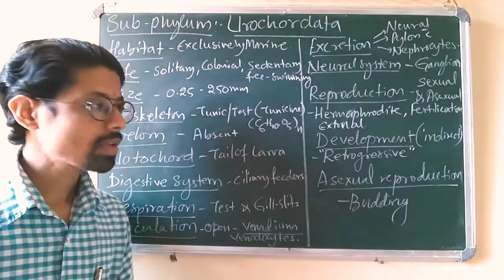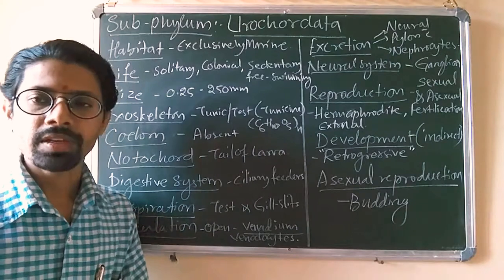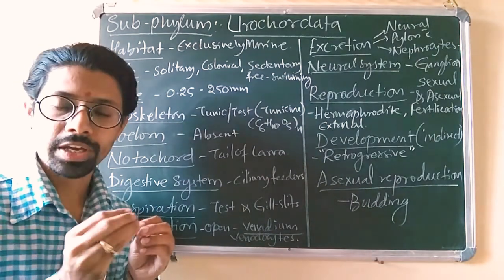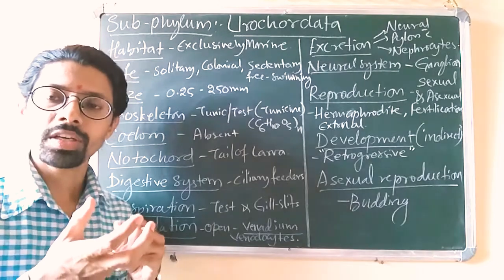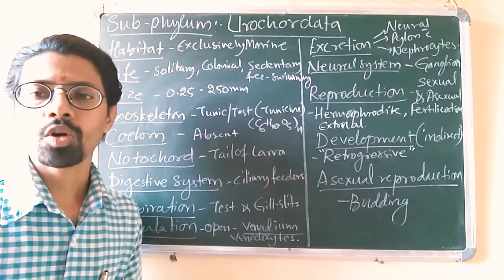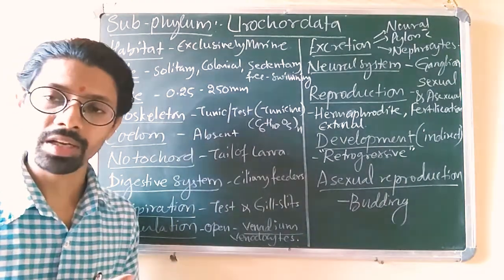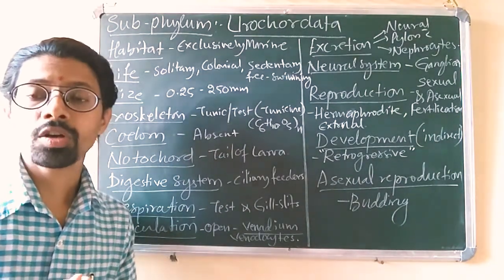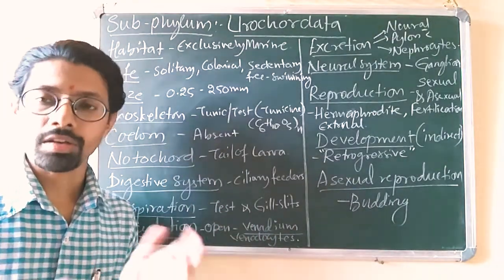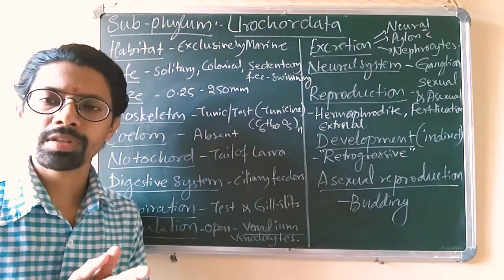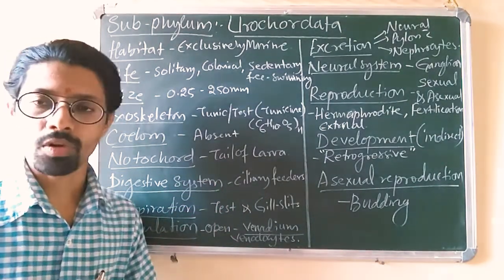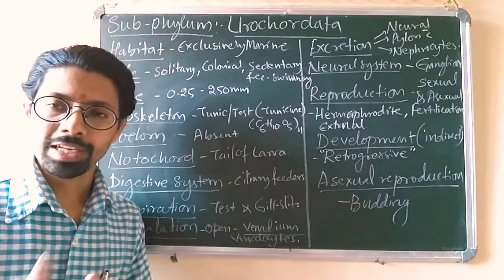Asexual reproduction includes budding — an outgrowth forms from the body, grows completely, and either separates from the parent body or remains to form a colonial or clustered body. Similar to poriferans, they sometimes show colonial organization, like Ascidia, but solitary organisms like Herdmania are also present. We will discuss more examples with respect to the classification of this subphylum Urochordata in the next video. Thank you.